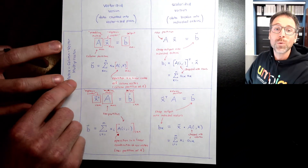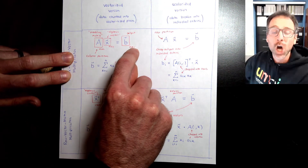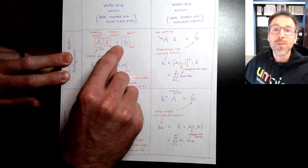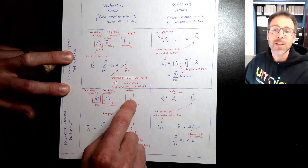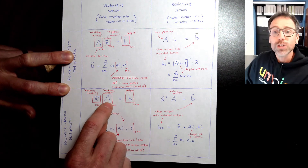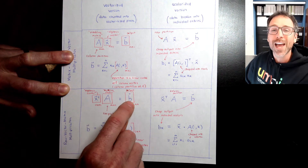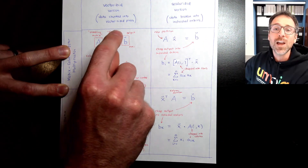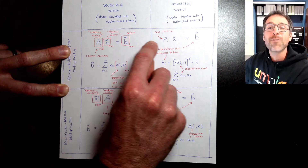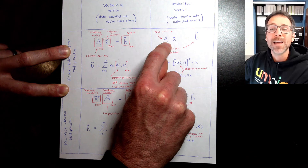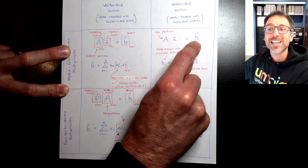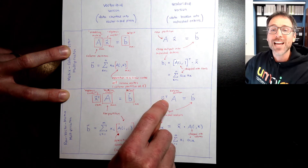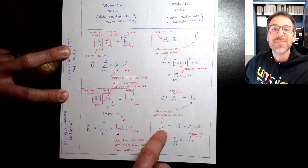Quick recap: when doing matrix column vector multiplication and generating the output as a linear combination of vectors, we chop our modeling matrix into column vectors. Similarly, for row vector matrix multiplication with a linear combination output, we chop into rows. From those two cases the other two follow: with column vector operations we chop into columns; with scalar operations we chop into rows and dot the i-th row of A with x to get the i-th output entry. For row vector multiplication with scalar output, we chop into columns and dot the k-th column with x.